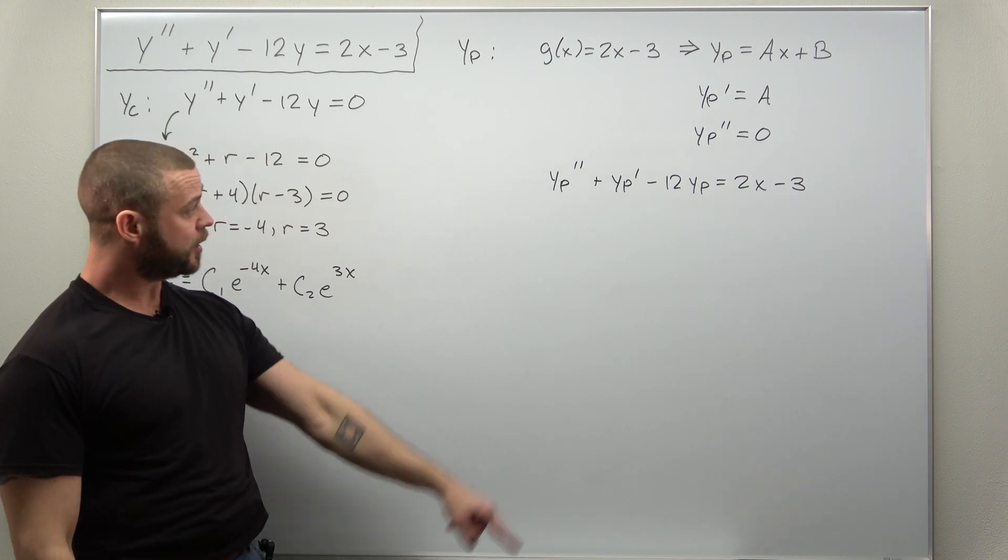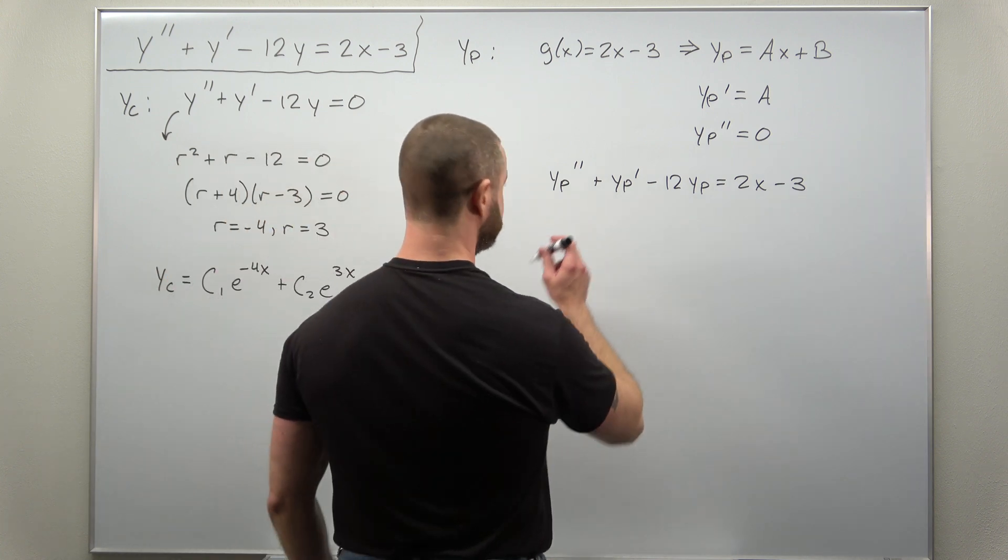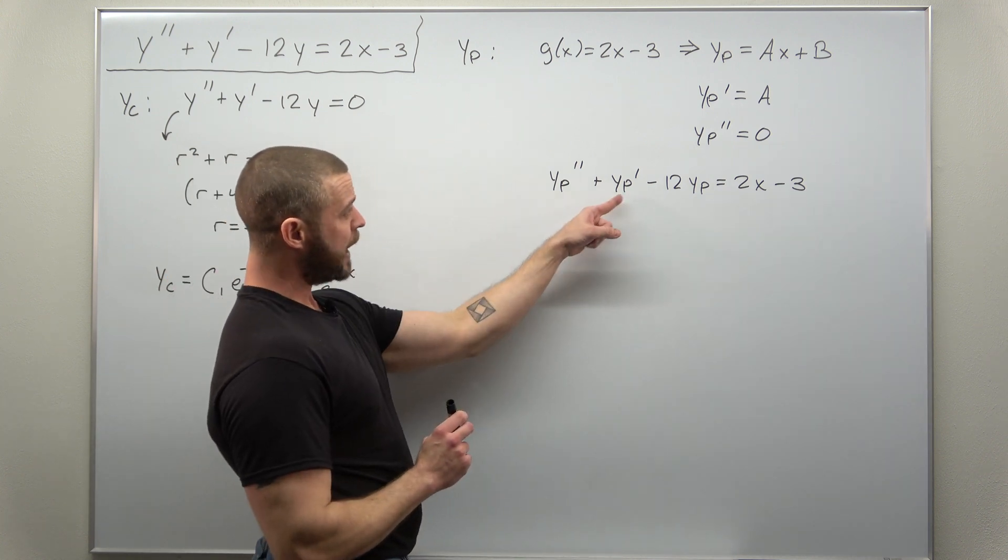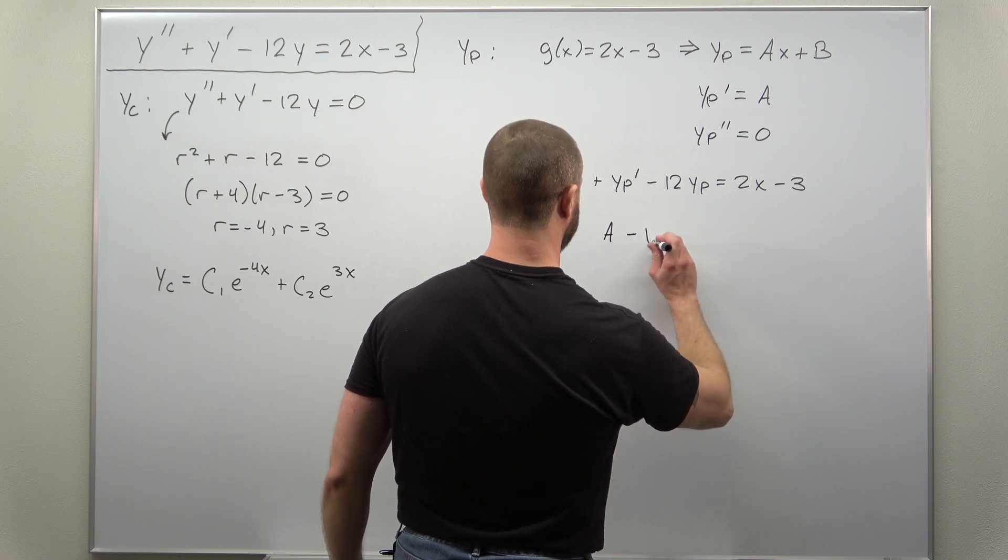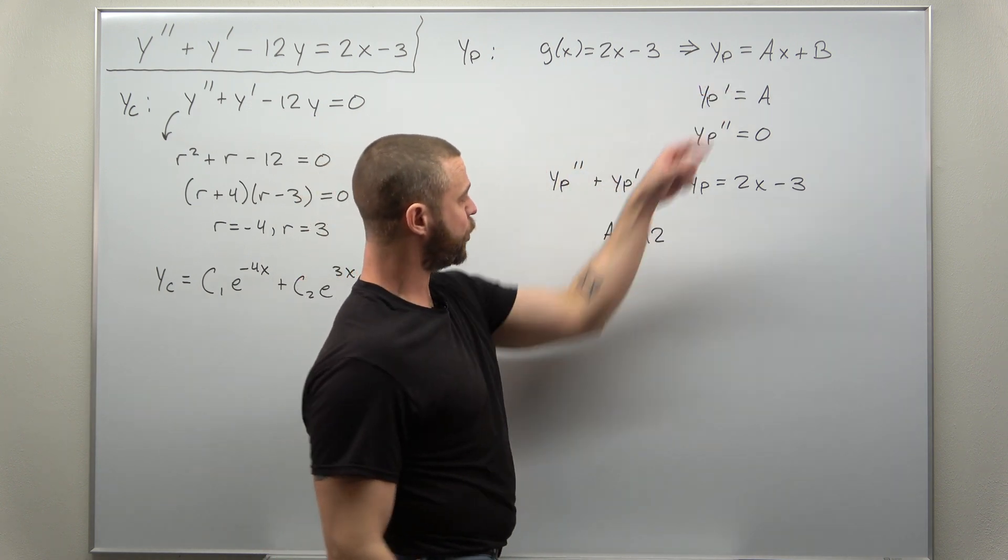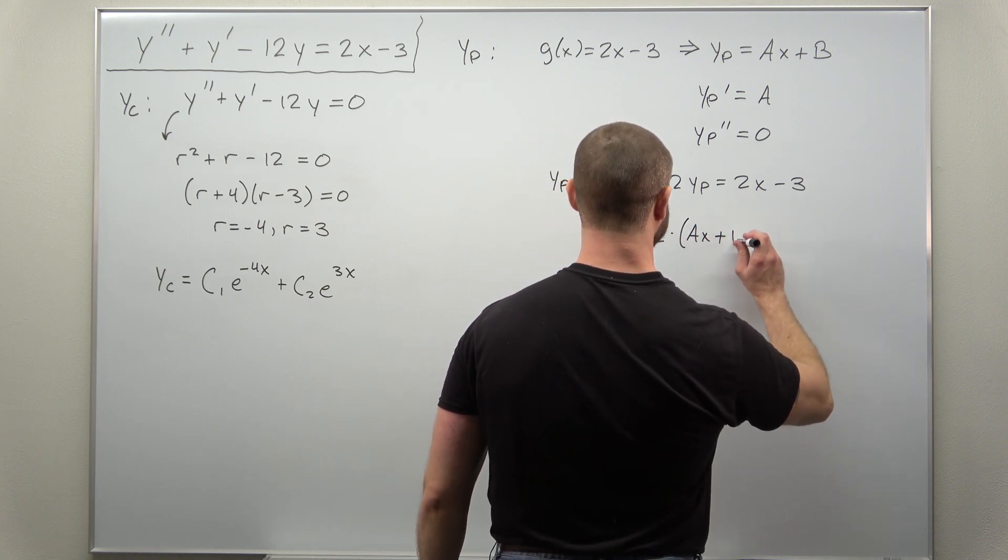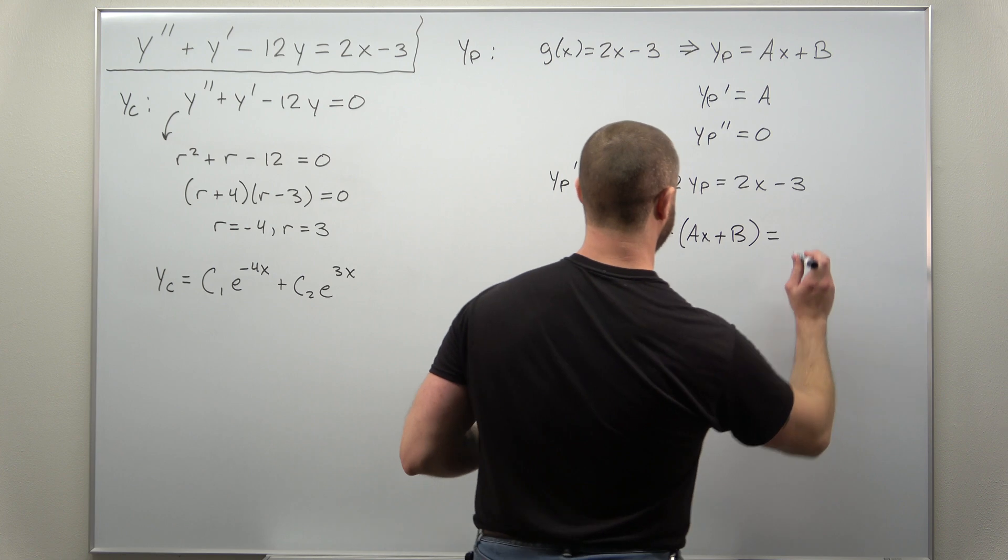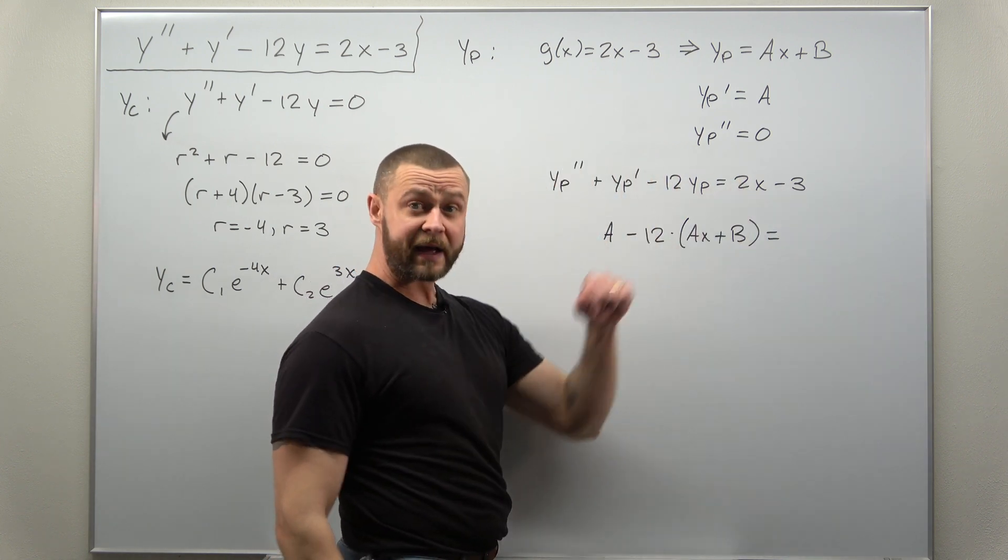Let's go ahead and plug them all in. Yp double prime is zero, so I don't need to include that. Yp prime is just a. And then we get minus 12 times yp, which is ax plus b. We want that to all equal 2x minus 3.